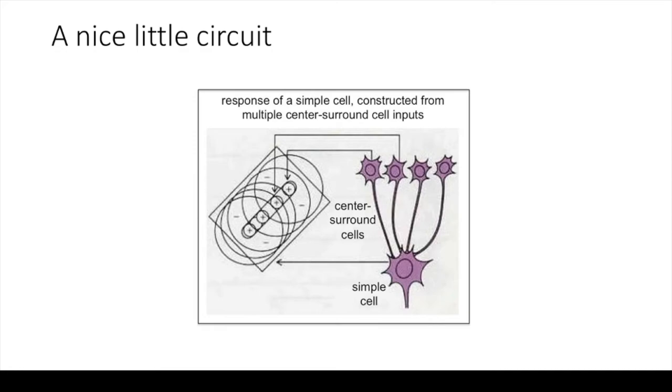Notice that a larger shape, such as a rectangle, won't do much for the simple cell. This is because center surround cells are inhibited by light outside their center area, so anything wider than a thin line would trigger too much inhibition.